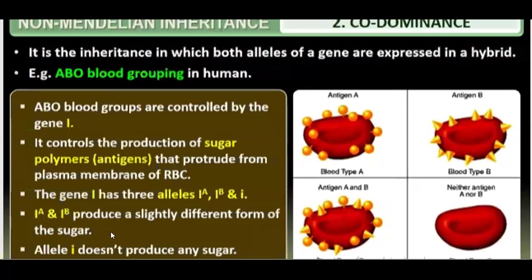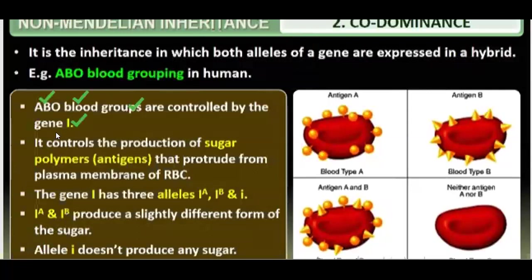ABO blood groups are controlled by gene I, which controls the production of sugar polymers that protrude from the plasma membrane of RBCs. The gene I has three alleles: IA, IB, and small i. Who has a gene of IA, the blood group will be A. Who has a gene of IB, the blood group will be B. And who has small i, the blood group will be O.